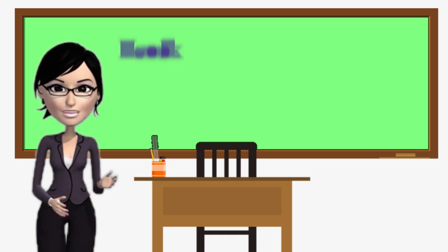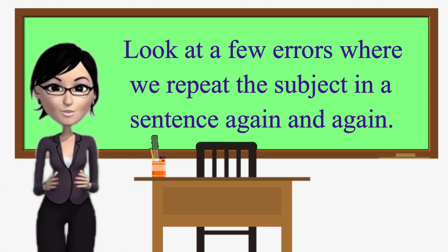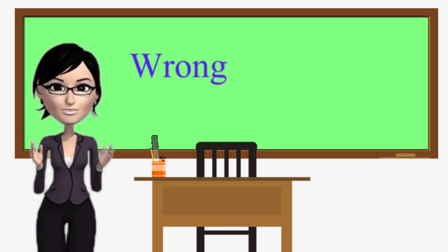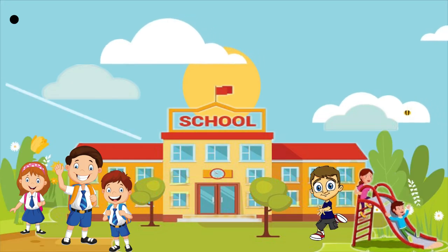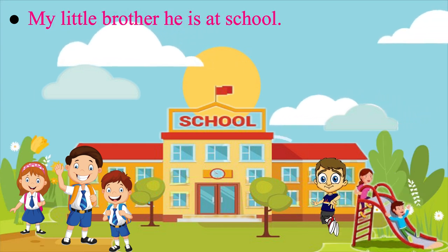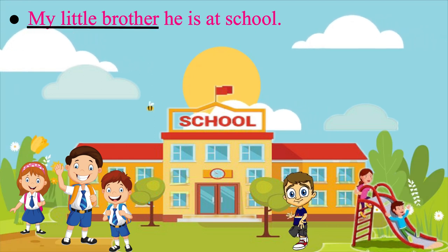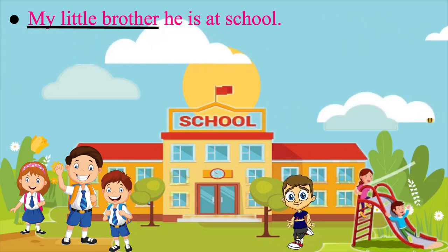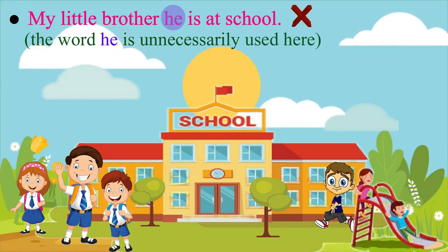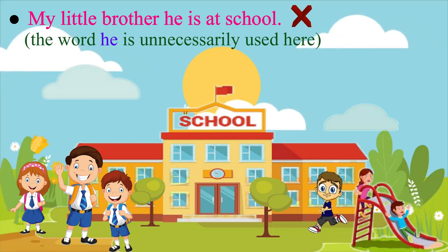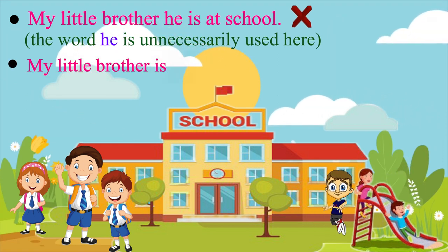Firstly, let us look at a few errors where we repeat the subject in a sentence again and again. Wrong repetition of subject. Look at this sentence: 'My little brother, he is at school.' In this sentence, 'my little brother' is the subject, so the word 'he' is unnecessarily used here. Please repeat the correct sentence after me: My little brother is at school.